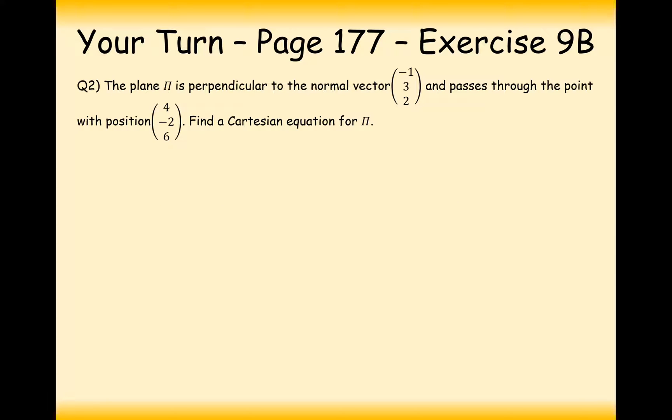So, have a go at this single question here, then. Pause the video and try this one out. Question two says here that the plane pi is perpendicular to the normal vector minus 1, 3, 2, and passes through the position vector 4, minus 2, 6. Find the Cartesian equation of this plane.